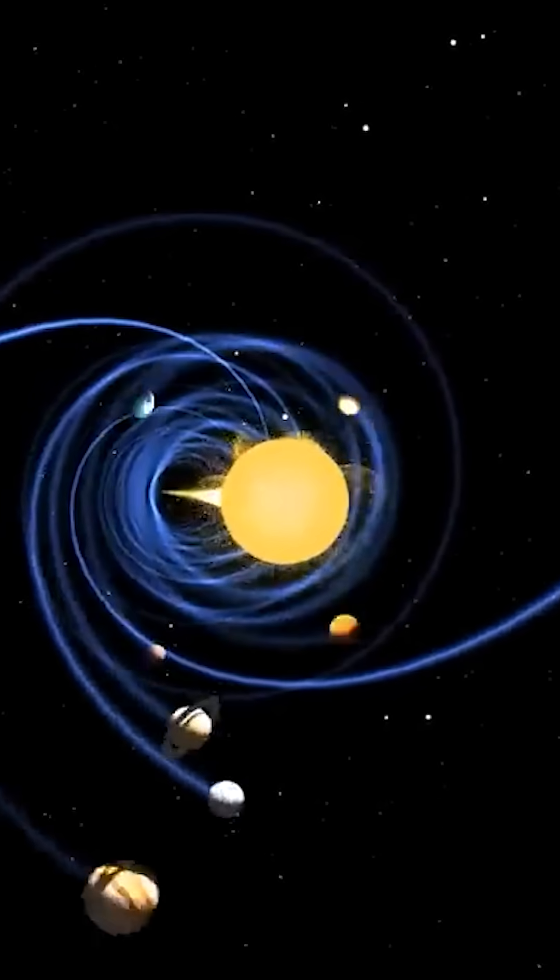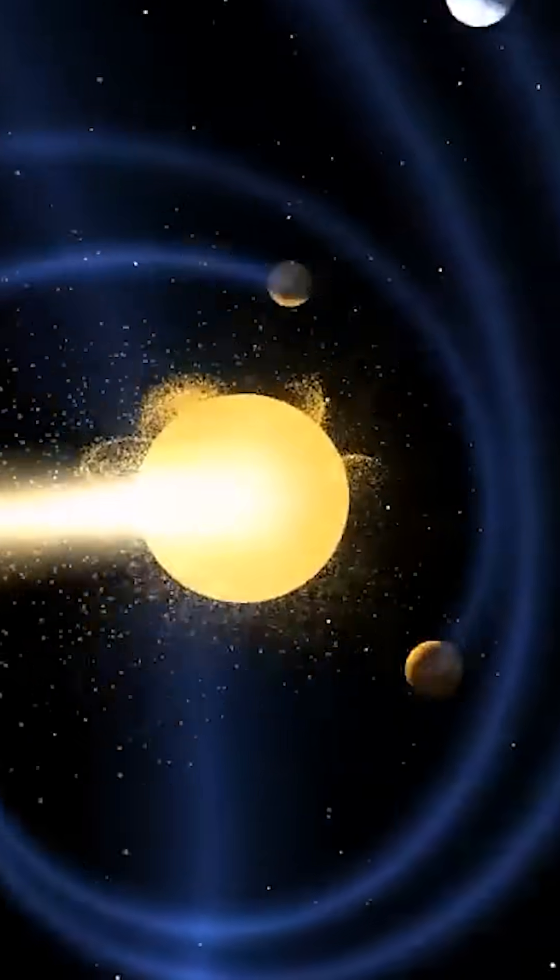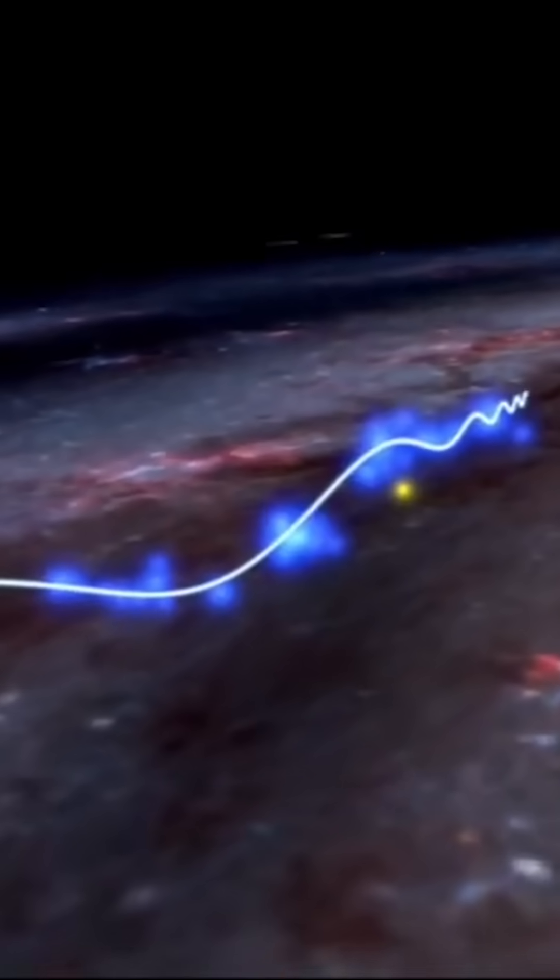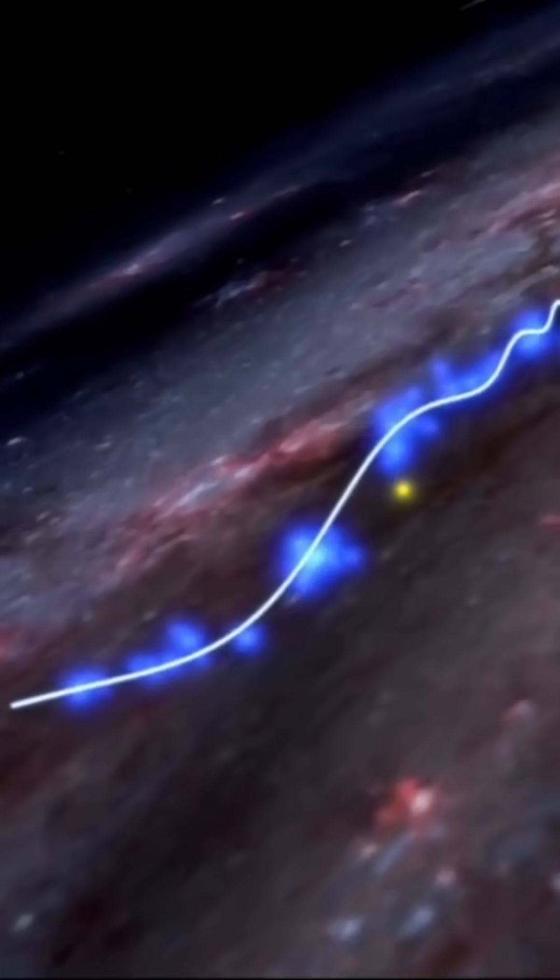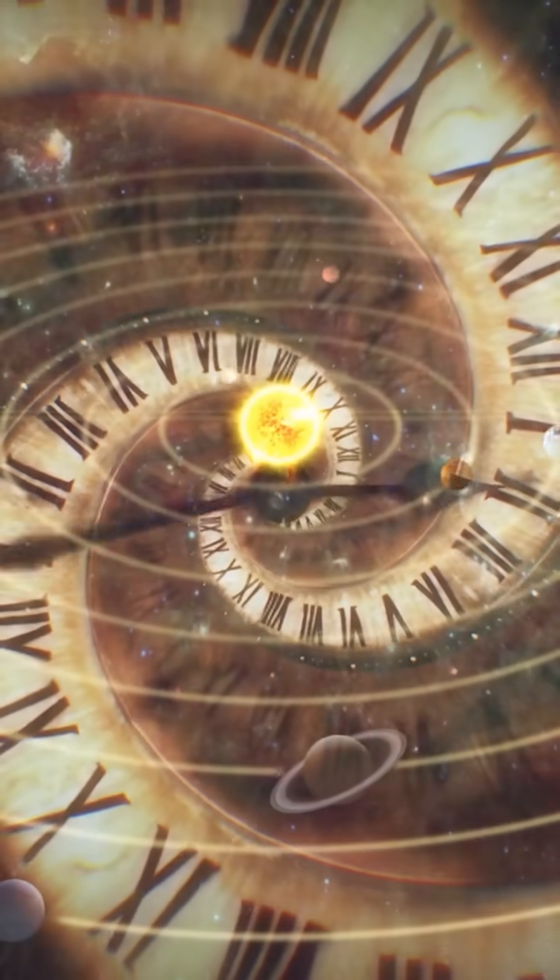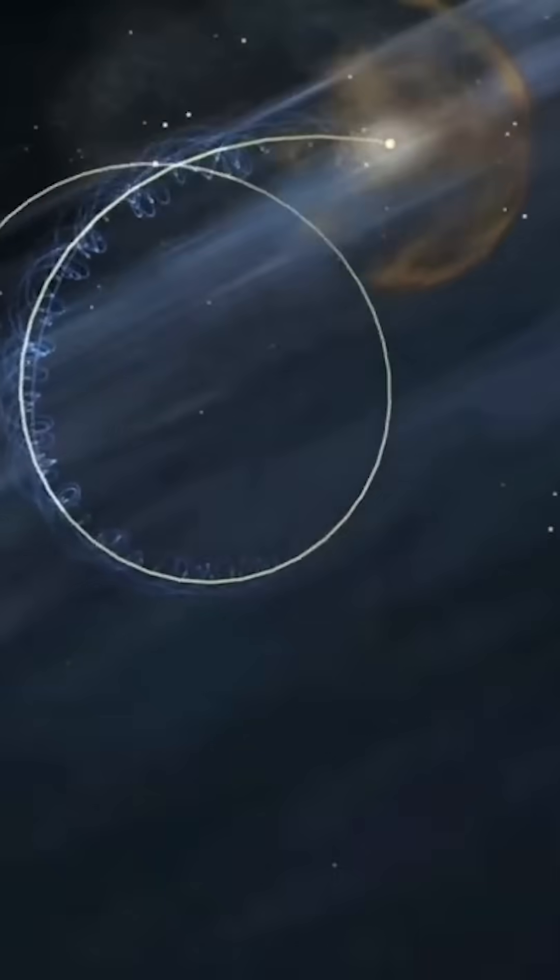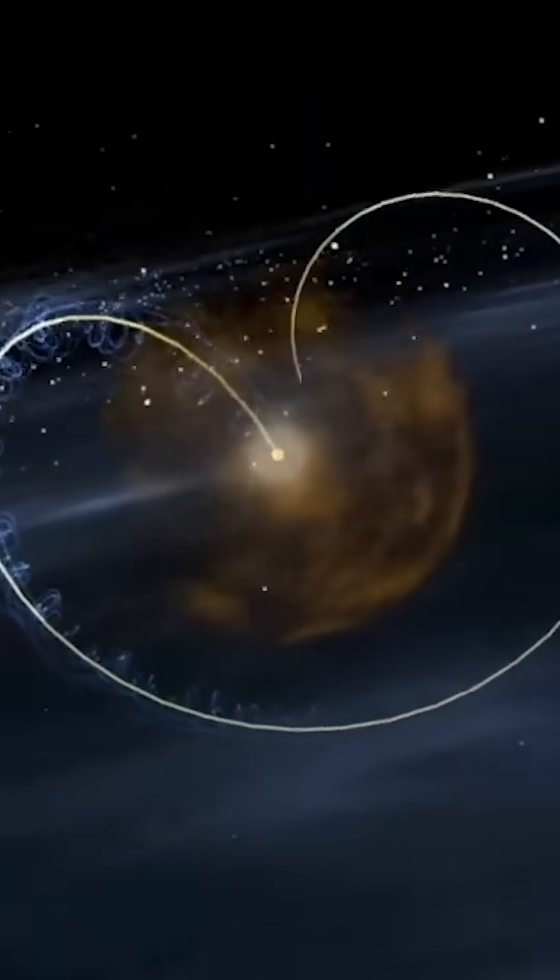Above and below the galactic plane, scientists have discovered something astonishing. There are waves in space, but not ordinary waves. These ones bend time, give birth to stars, and flip magnetic fields upside down.